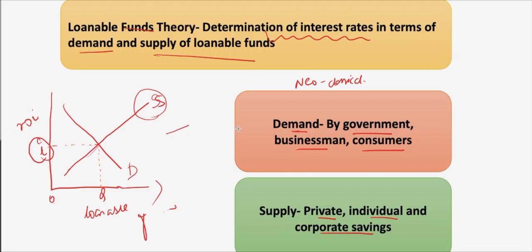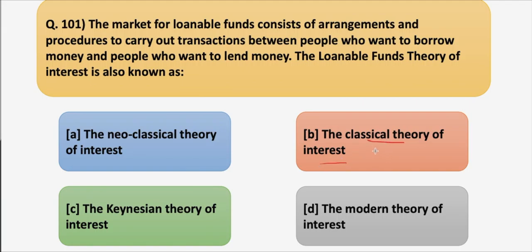In the classical theory of interest, the demand for capital is a demand for investment which is influenced by the marginal productivity of capital, whereas the supply of capital comes from saving which depends on the willingness and power to save.